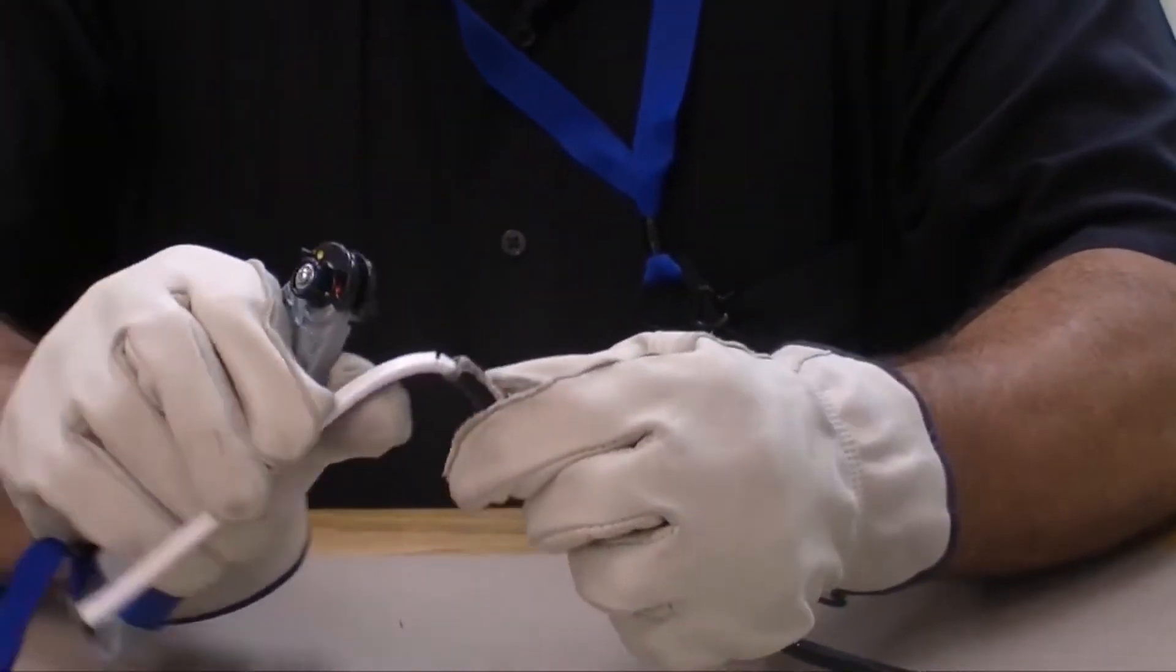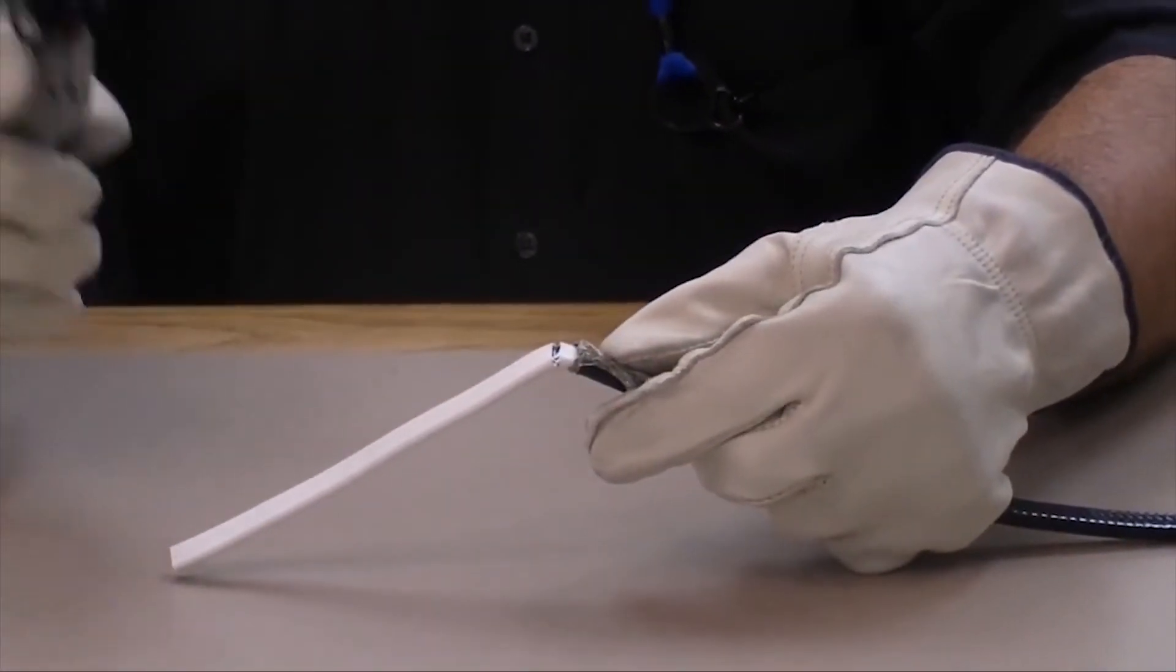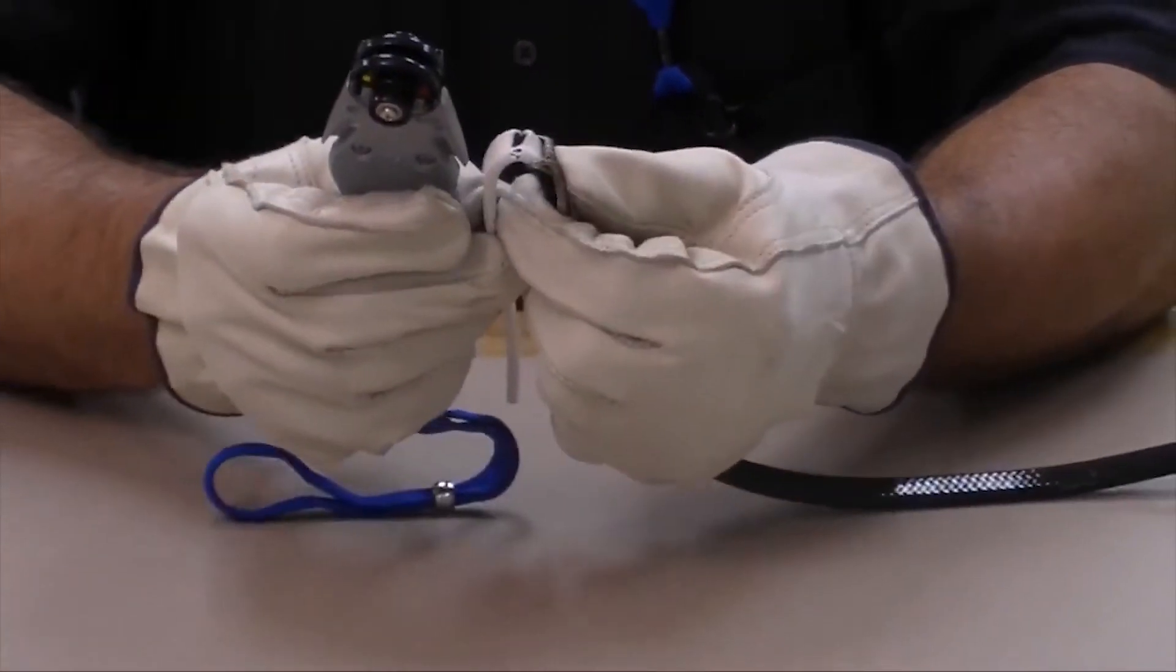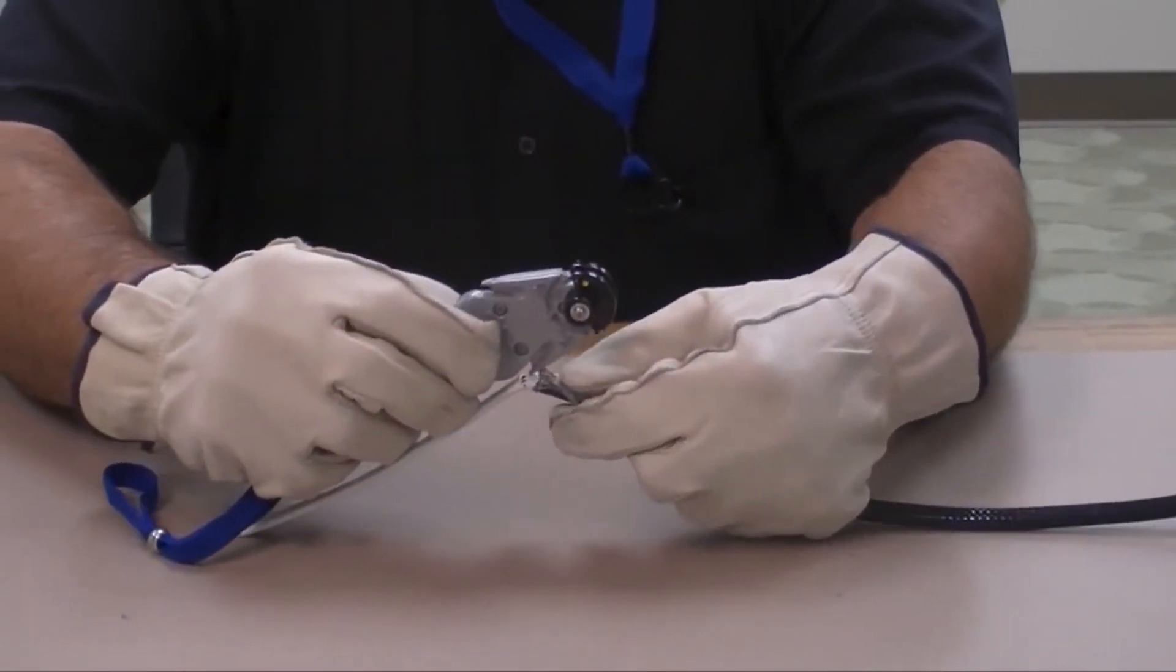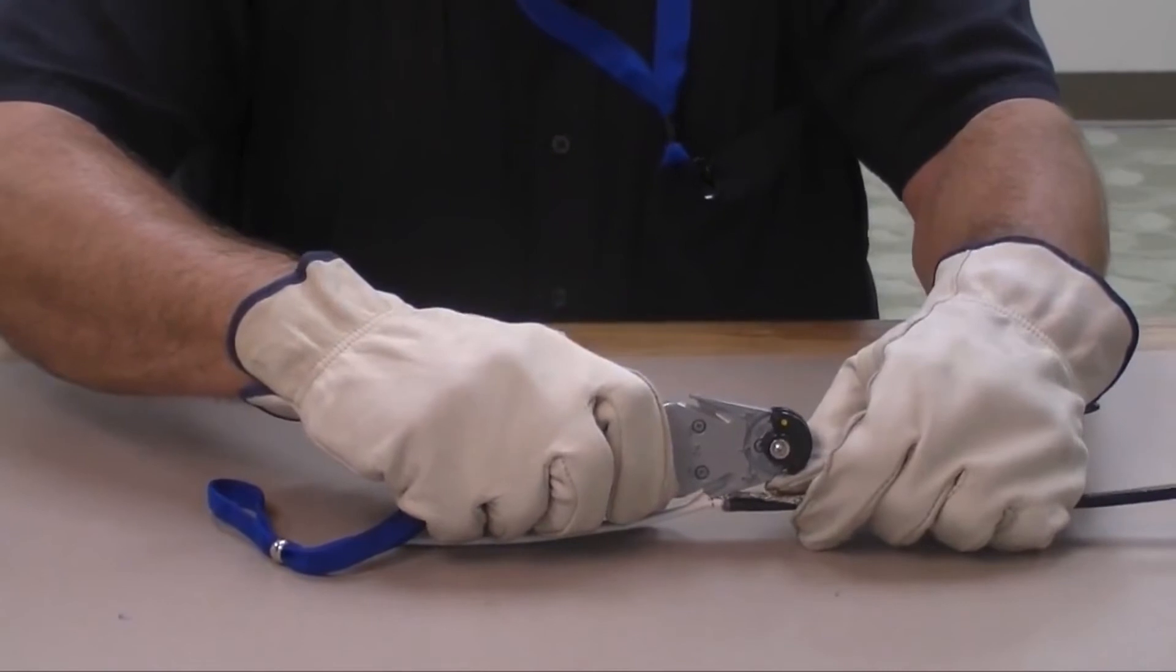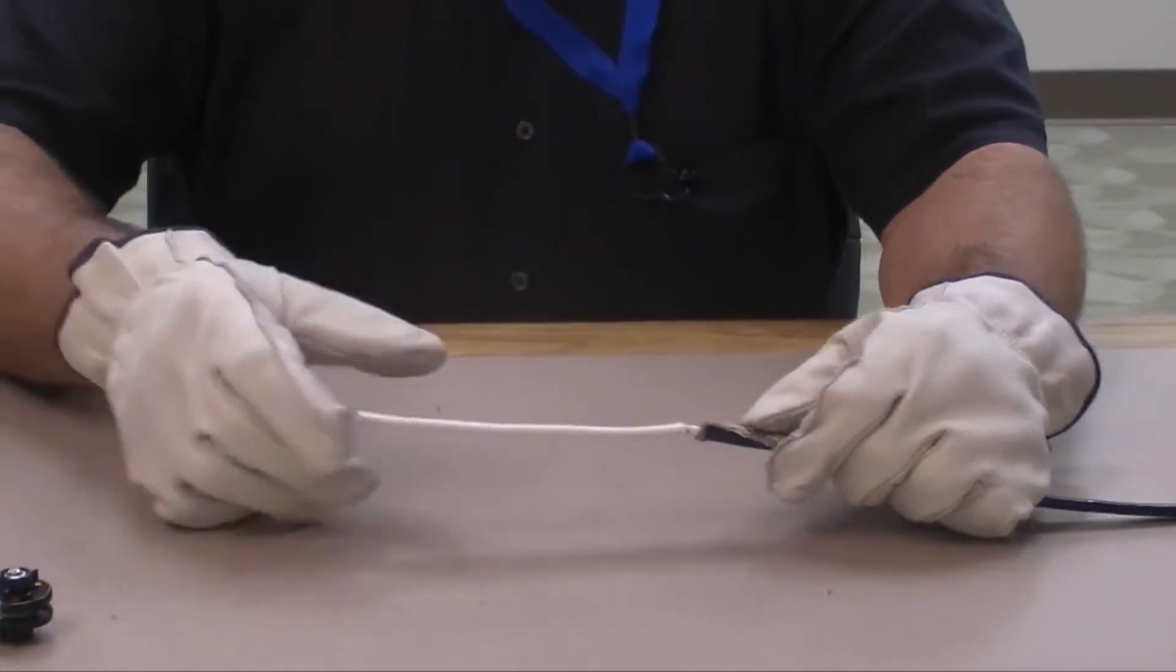Bend the heating cable at the score to separate the jacket. Insert the jacket's slitting tip under the cable jacket. Pull the stripping tool towards the end of the heating cable to split the jacket.